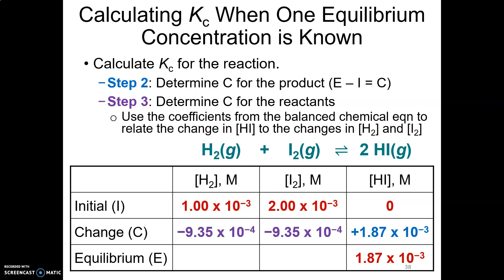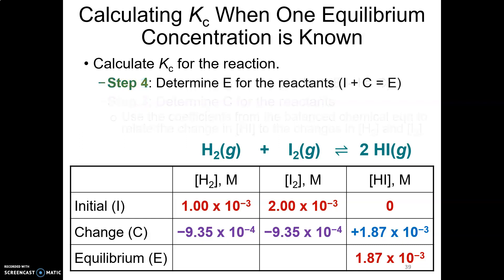Step four: I plus C equals E — add your initial and change to get your equilibrium concentrations. The change is the same for both reactants, but since they started with different initial amounts, their equilibrium concentrations will differ. The equilibrium concentration of H₂ is 6.5×10⁻⁵ M and the equilibrium concentration of I₂ is 1.07×10⁻³ M.